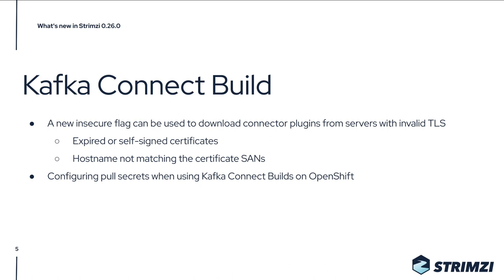There are also some other small improvements to the Kafka Connect build. There's a new insecure flag if you want to download connectors from servers using TLS that have configuration problems such as expired or self-signed certificates, or where the hostname doesn't match the subject alternative names. On OpenShift, you can now also specify pull secrets in the Kafka Connect build so OpenShift can authenticate against the registry when pulling the base image used for the newly built Kafka Connect image.